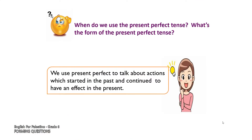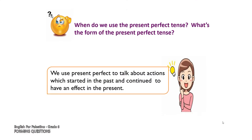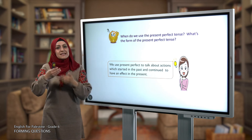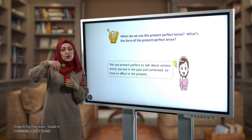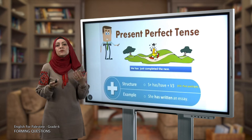Let's remember when we use the present perfect tense and what its form is. We use the present perfect to talk about actions which started in the past and continued to have an effect in the present. The action has finished, but its effect is still felt in the present time.